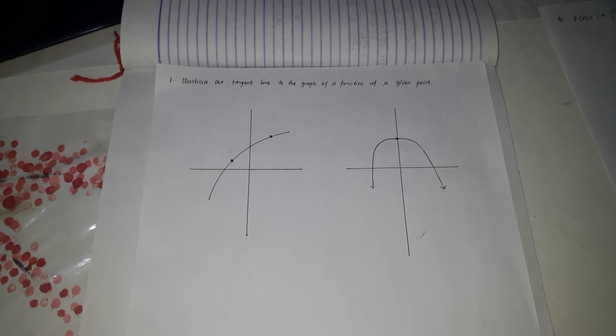So how are we going to identify if a line is the tangent line? There is a more formal definition, but it would be better understood if we draw an example.